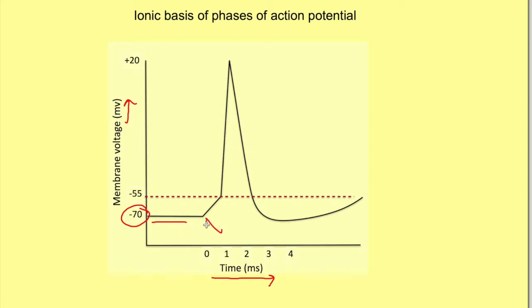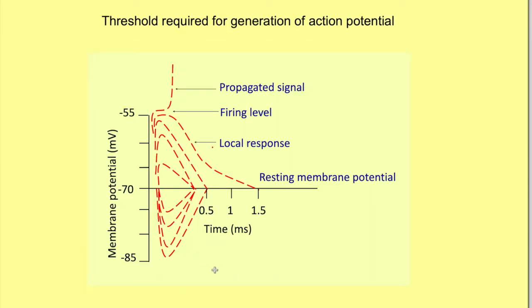At RMP a stimulus comes — it is an excitatory stimulus because it is causing the change in potential towards the positive side. The membrane potential is becoming less negative. This excitatory stimulus causes a graded change in potential, and once threshold is reached — shown as a red line — the action potential is fired. A stimulus leads to a graded change in potential as shown in the diagram.